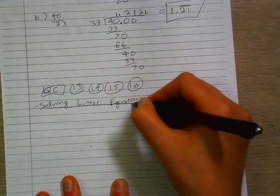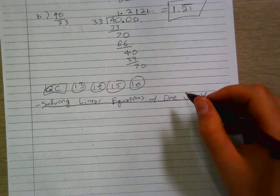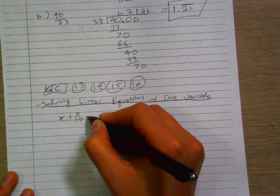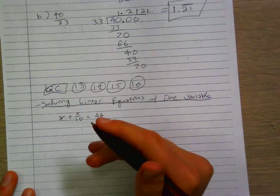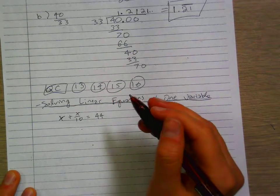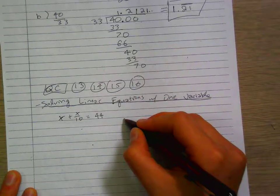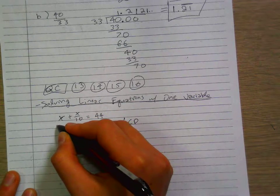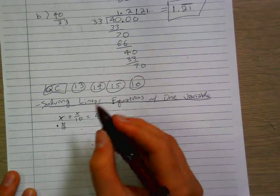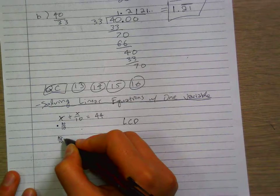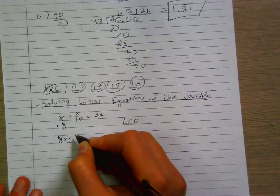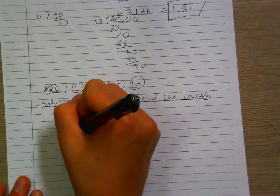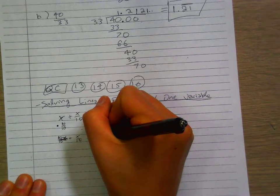We've learned how to solve them with one variable. For example, you can do x plus x over 10 equals 44. To do that, we're going to follow a few steps. First, we're going to write all the terms with a common denominator. So x, we're going to multiply it by 10 over 10. That gives us 10x over 10 plus x over 10, and that equals 44.